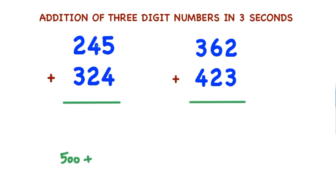Now it comes to the tens place — 4 is there, so you consider 40. In the tens place, 2 is there, so you consider 20. 40 plus 20 is 60.